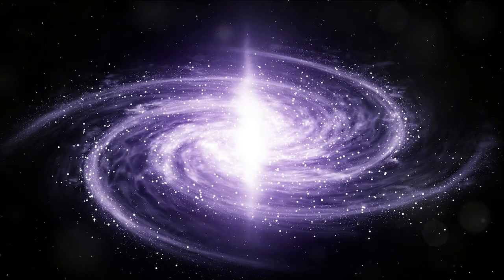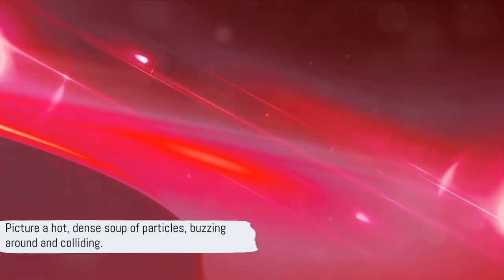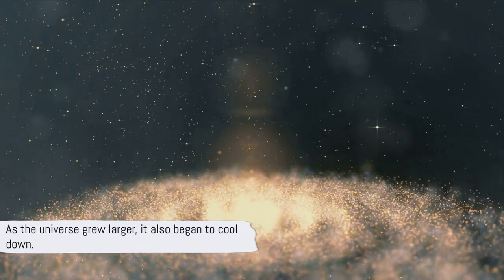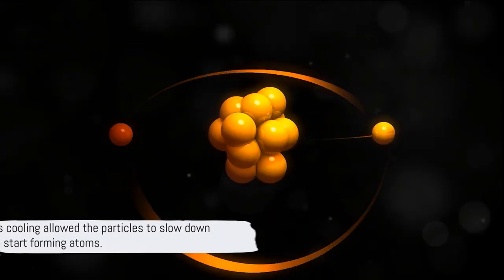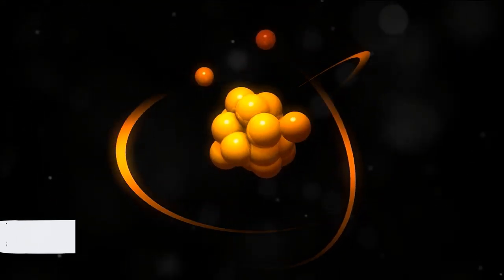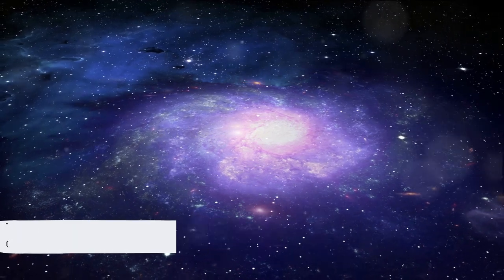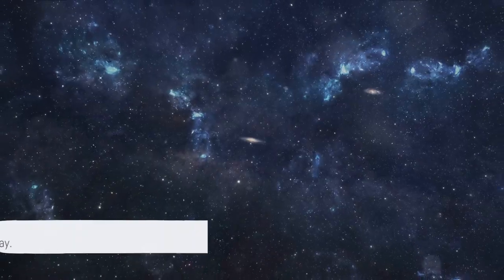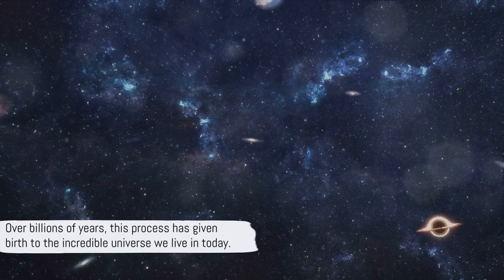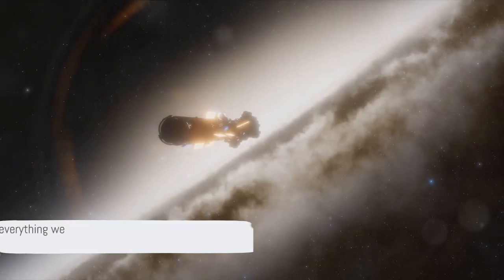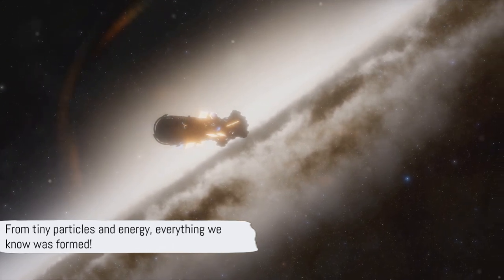When the universe first started, it was full of tiny particles and lots of energy. Picture a hot, dense soup of particles buzzing around and colliding. As the universe grew larger, it also began to cool down. This cooling allowed the particles to slow down and start forming atoms. These atoms eventually clumped together to create stars and galaxies. Over billions of years, this process has given birth to the incredible universe we live in today.